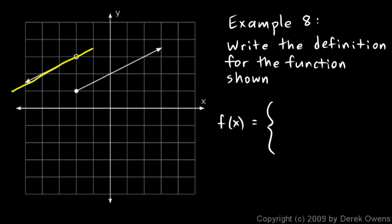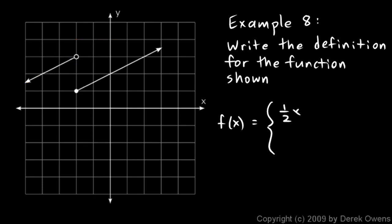If you continue the trend of the first line sketched in yellow, you can see it has a y-intercept of four. From any point, we go up one over two, so the slope is one-half and the y-intercept is four, giving us one-half x plus four. That equation applies whenever x is less than negative two — not less than or equal to, because there's an open circle on the graph right there.